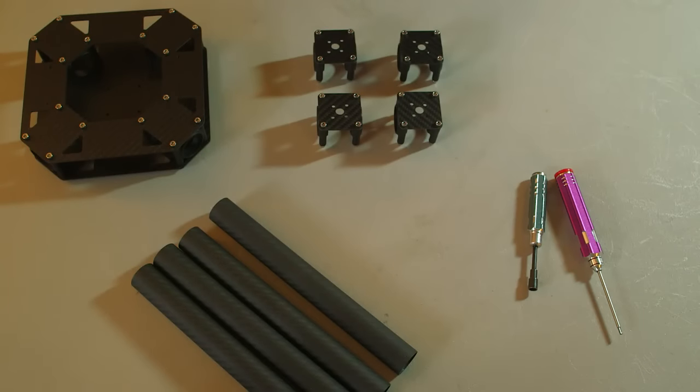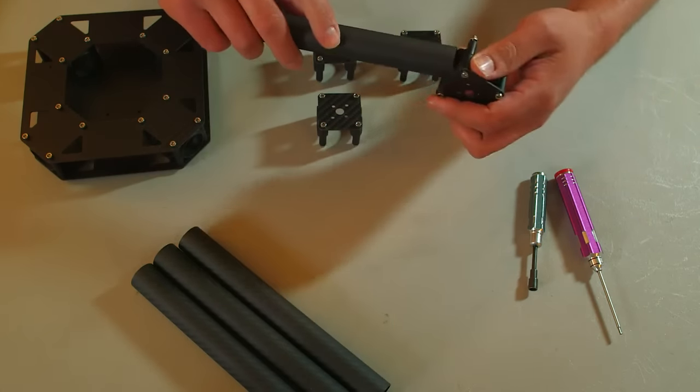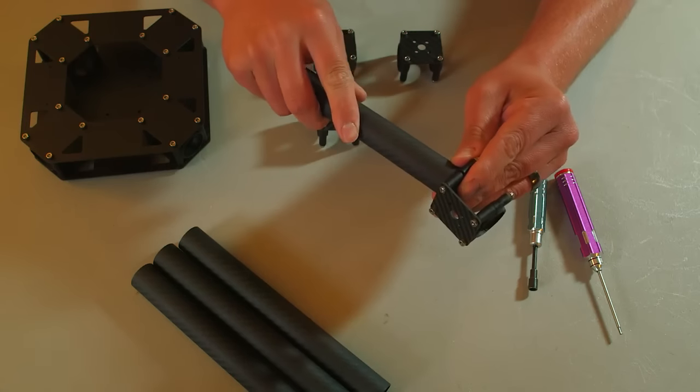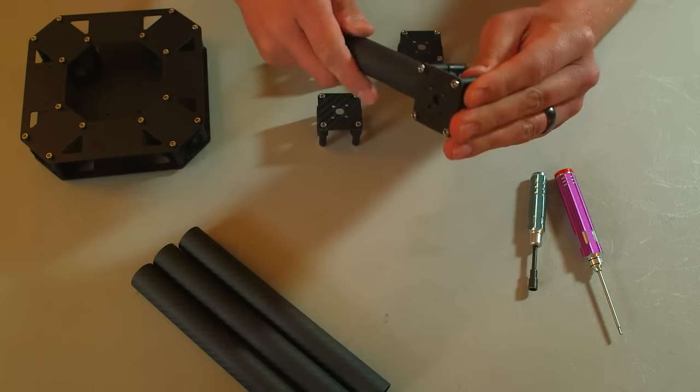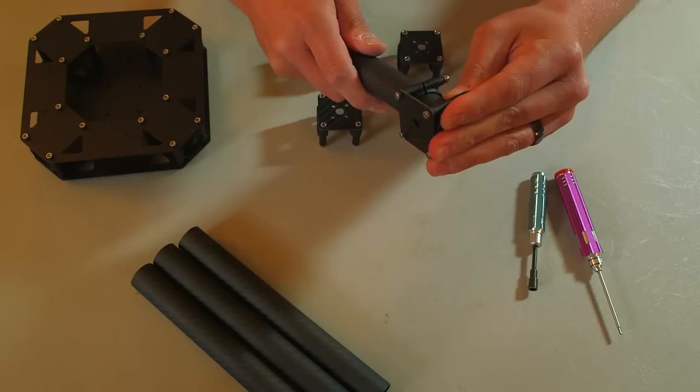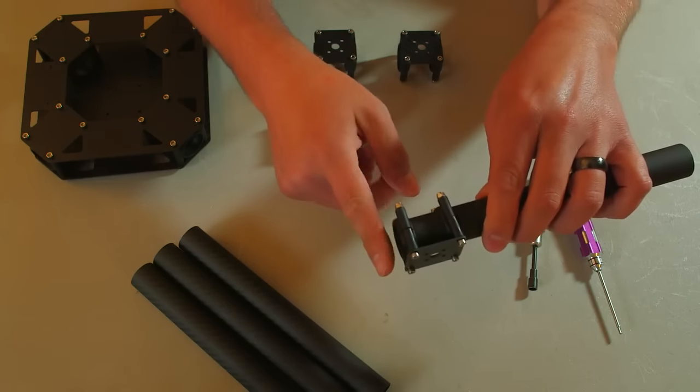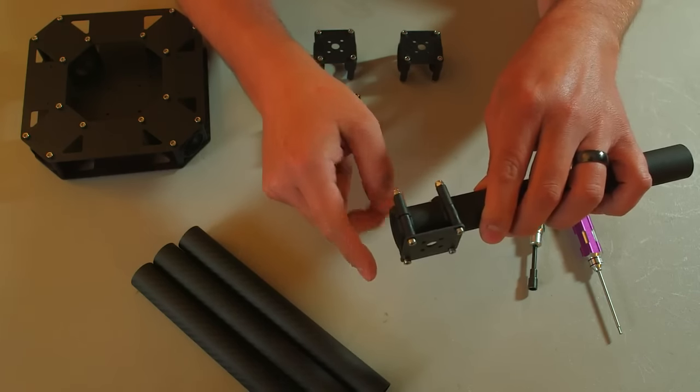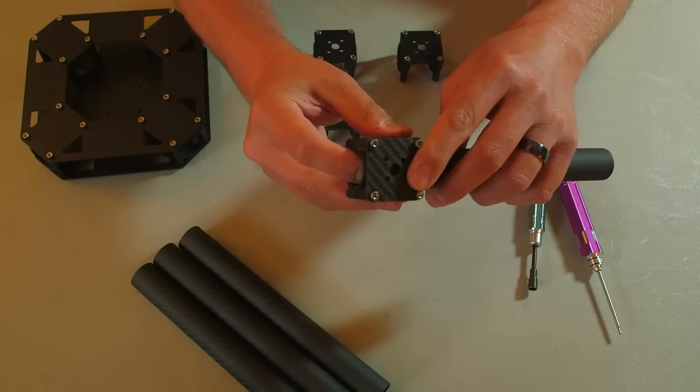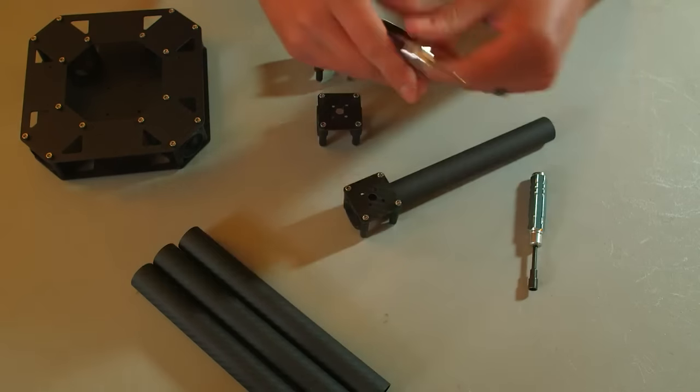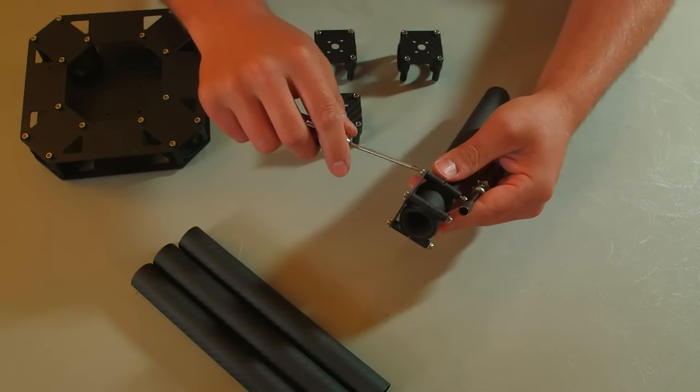Now we will connect the boom tubes and the motor mounts. Gently twist the tube once you get it through, make sure that it's flush with the edge of the clamp and the edge of the boom. Once you have that you can start to tighten.